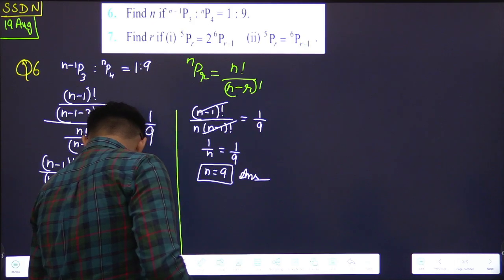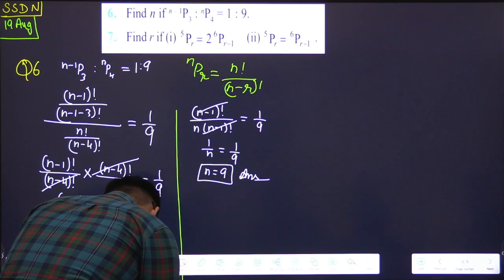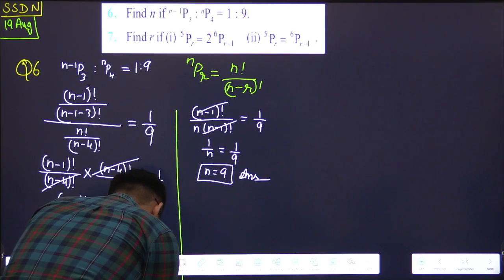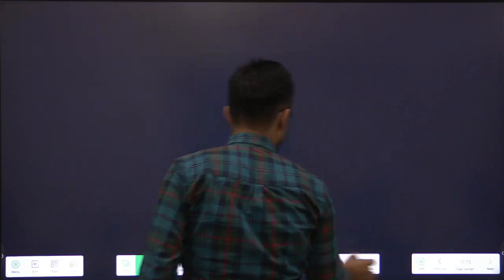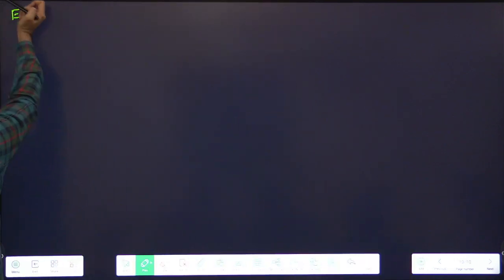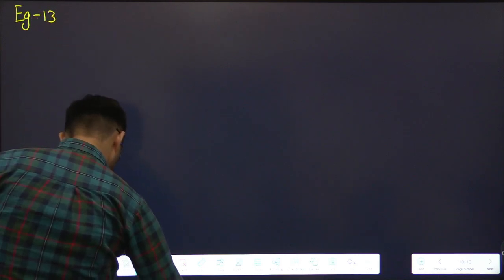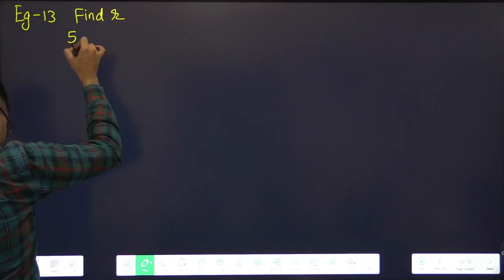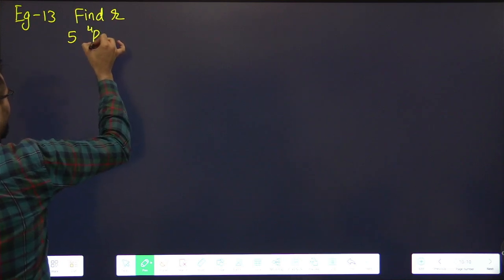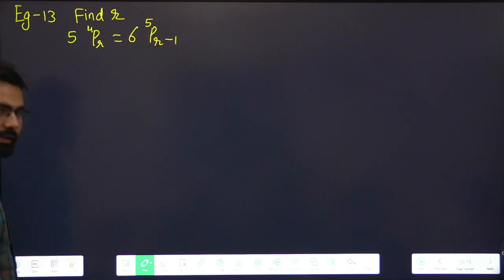Now we have a question. Question number, example number 13. We have a question. Find r. r has to be found. If 5×4Pr is equal to 6×5P(r-1). Solve this, r has to be found.